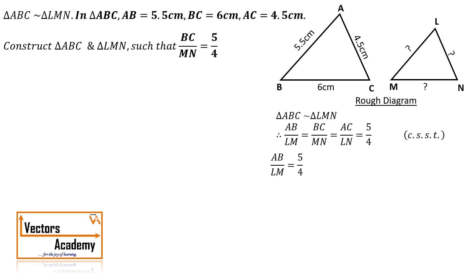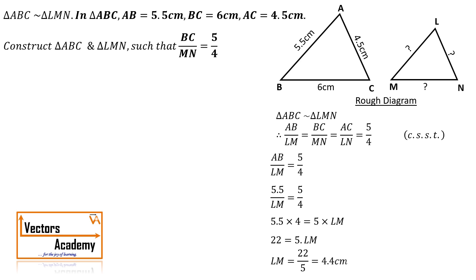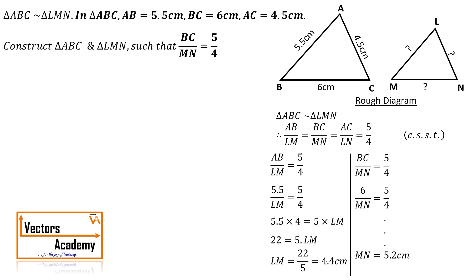We'll take the first ratio: AB upon LM as 5 by 4. We know the value of AB is 5.5. We substitute in the equation, cross multiply, and find the value of LM as 4.4 centimeters. Similarly, BC upon MN is 5 by 4 — substituting the value of BC gives MN as 5.2. The third ratio, AC upon LN — substituting the value of AC gives LN as 3.6.